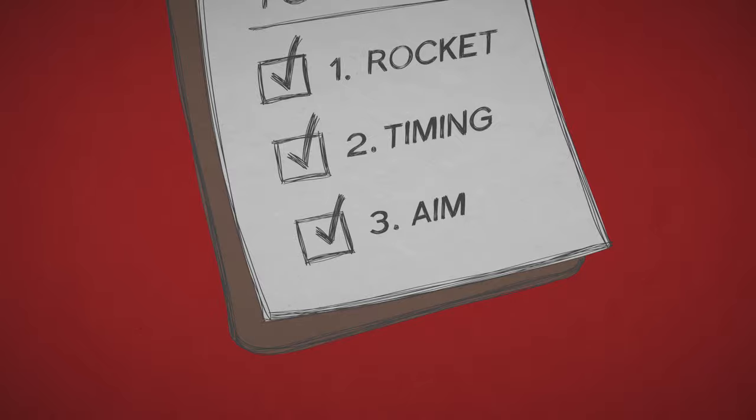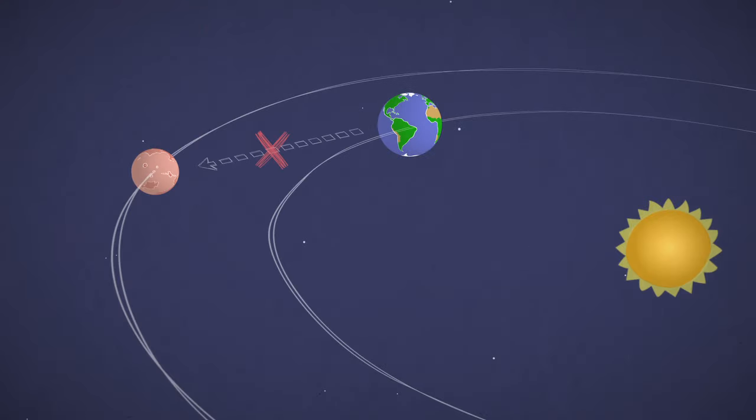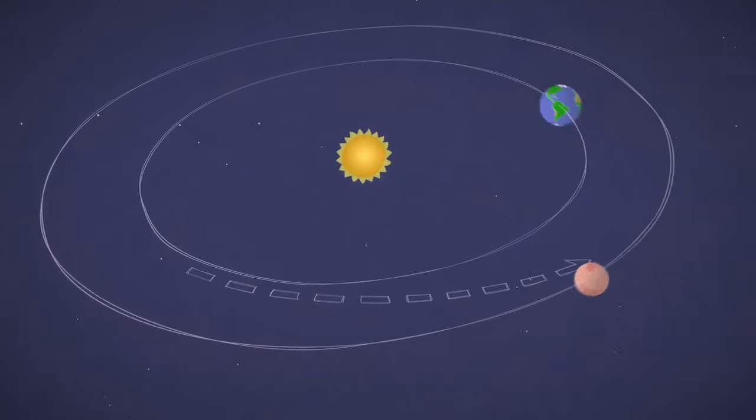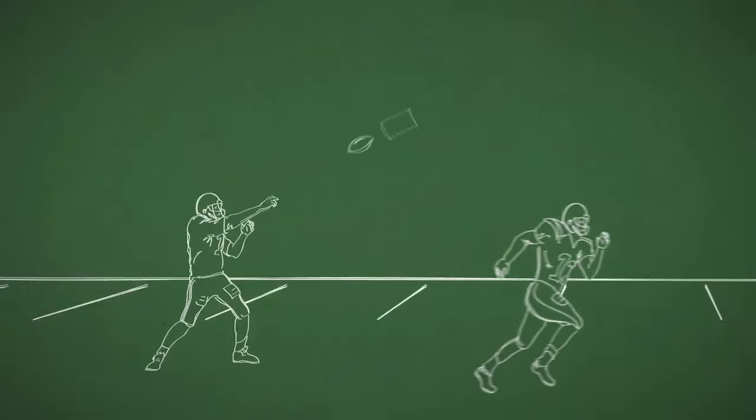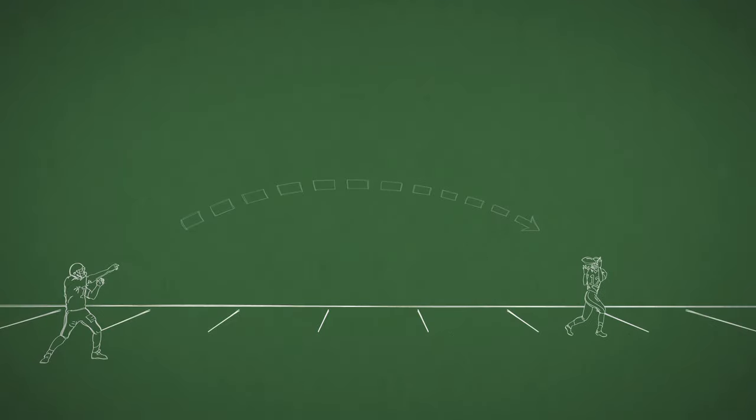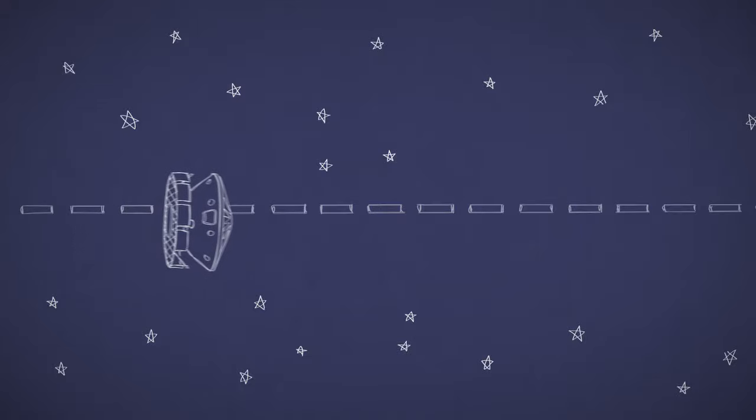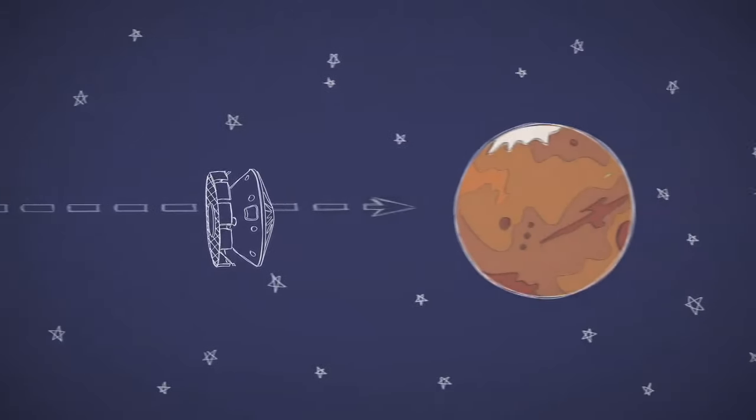Finally, make sure your aim is right. You can't shoot for where Mars is at launch time. You have to aim for where it will be when you get there. It's a lot like how a quarterback passes a football. Also, you may need a few thrusts to correct your direction along the way so you don't miss Mars.